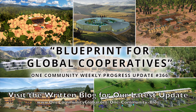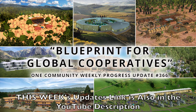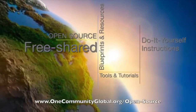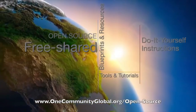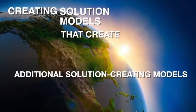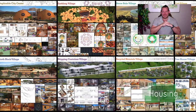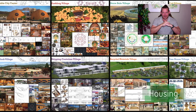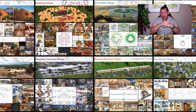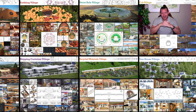A blueprint for global cooperatives. One Community Weekly Progress Update, number 366. One Community is a 501c3 nonprofit organization. We are creating open source and free shared blueprints and resources, tools and tutorials, and do-it-yourself instructions for highest good living — creating solution models that create additional solution-creating models in the service of all life on this planet. My name is Jay Sabal, and I'm the Executive Director. One Community is bringing together people with the consciousness and desire for the highest good of all life on this planet to build sustainable and self-replicating teacher demonstration hubs as a pathway to global sustainability.